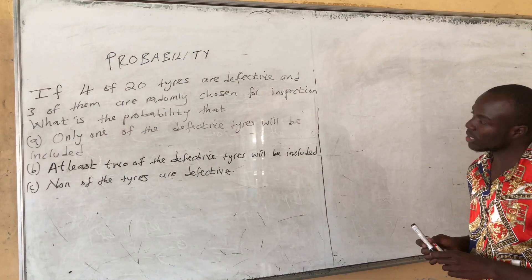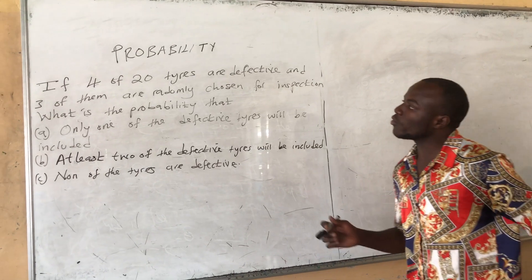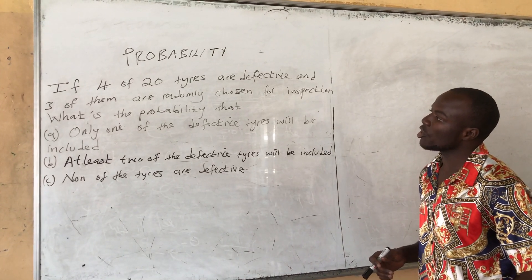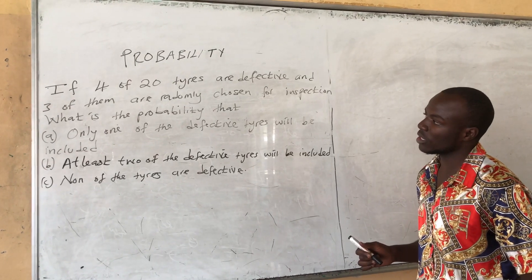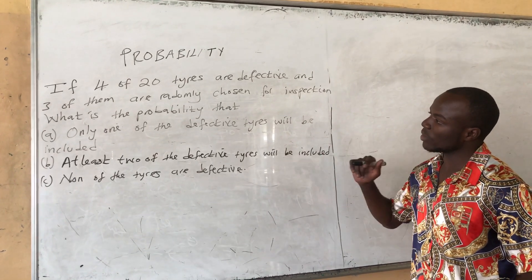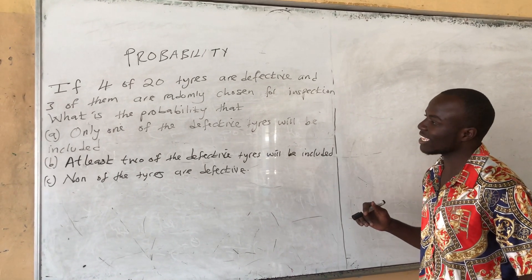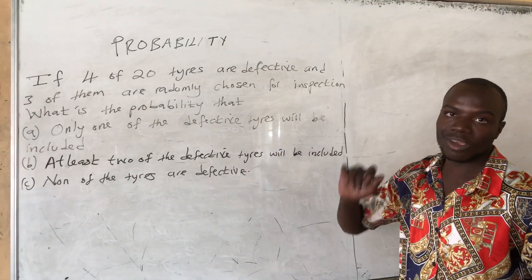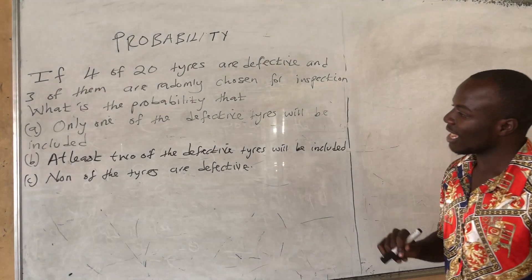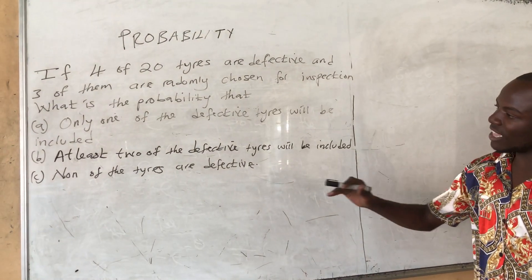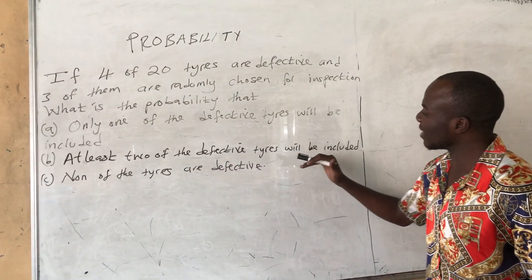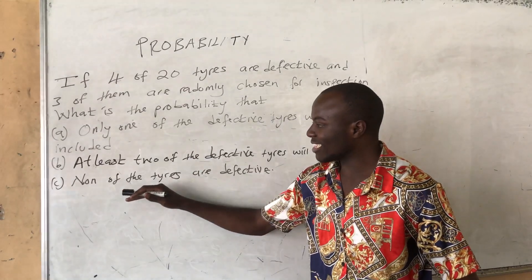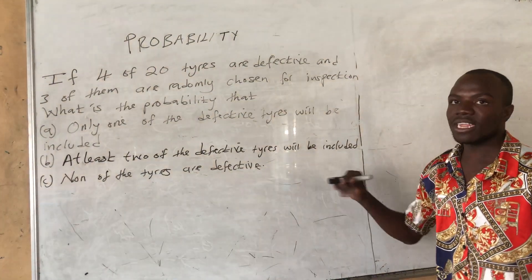The question reads: if 4 of 20 tires are defective and 3 of them are randomly chosen for inspection. First question: what is the probability that only one of the defective tires will be included? Second: what is the probability that at least two of the defective tires will be included? And the last question: what is the probability that none of the tires are defective?